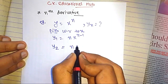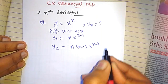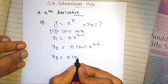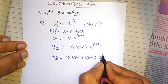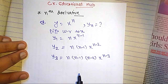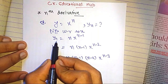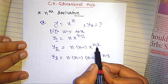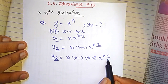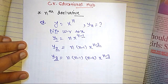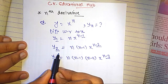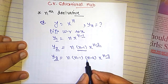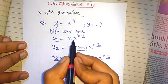Further differentiating: y2 equals n(n−1)·x to the power n−2. Again differentiating: y3 equals n(n−1)(n−2)·x to the power n−3. We can see that when differentiating the first time the power is n−1, the second time n−2, the third time n−3. The coefficient when differentiating the first time is n, the second time n(n−1), and the third time n(n−1)(n−2).